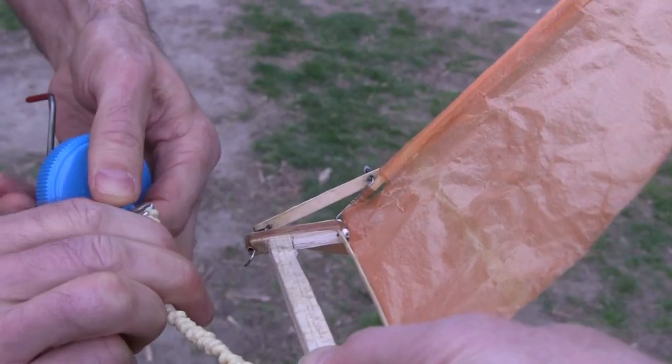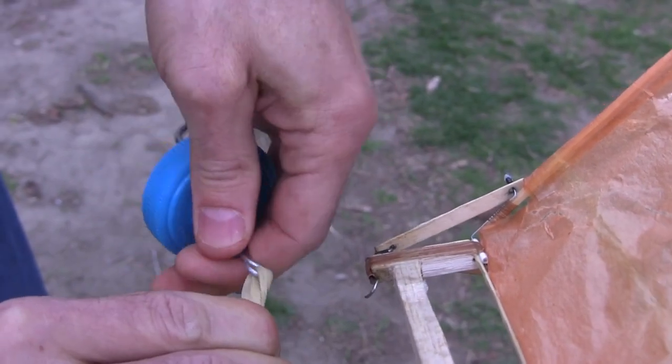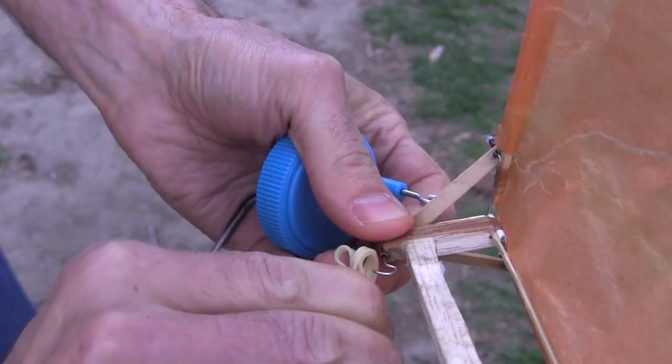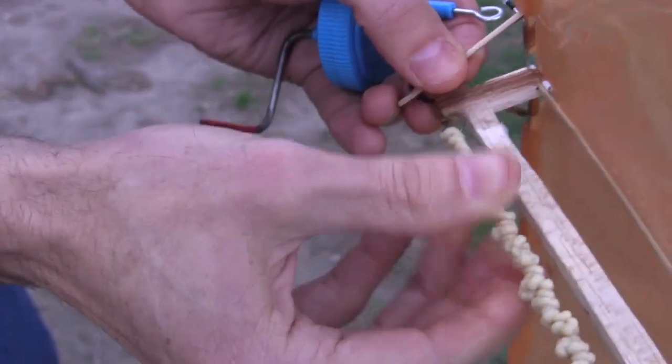When finished winding, pinch the rubber near the end, and carefully unwind the last few turns, to get nice big loops for taking off the winder's hook and putting on the ornithopter's hook. That prevents scratching the rubber on the ends of the hooks.